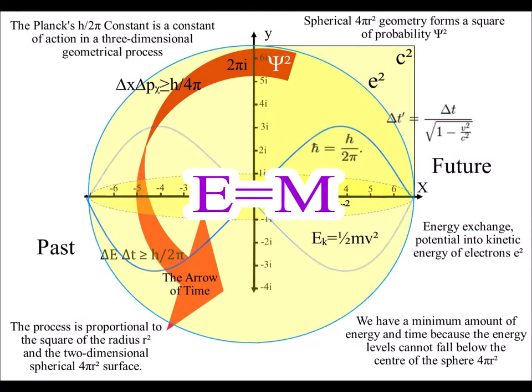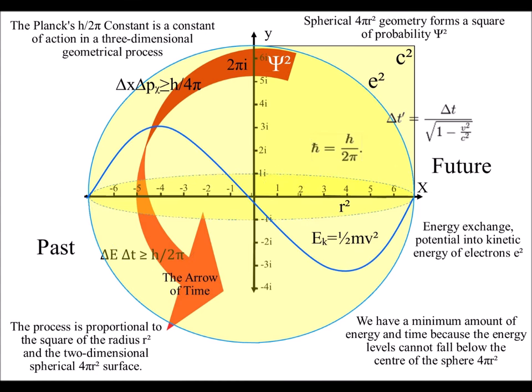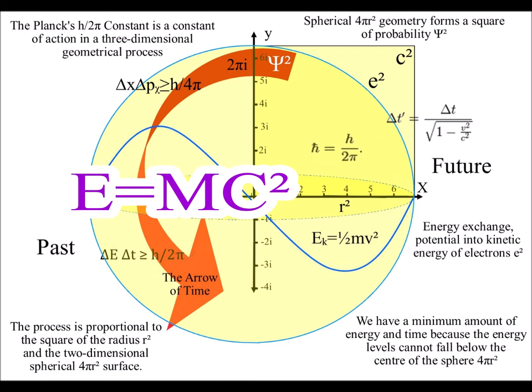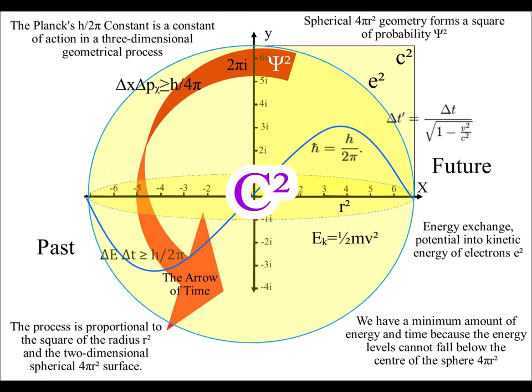Many people say energy equals mass or energy and mass are equivalent, but energy only equals mass if the mass is multiplied by the speed of light squared. The speed of light squared must represent something fundamental in the process that forms the characteristics of mass.